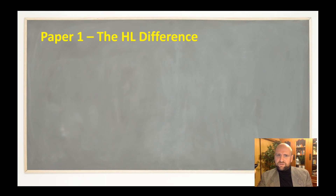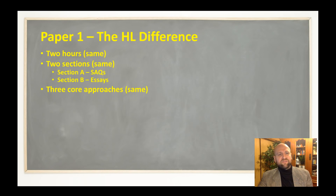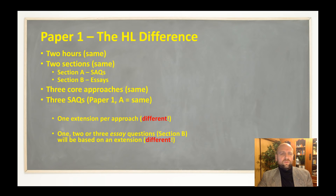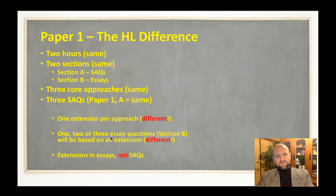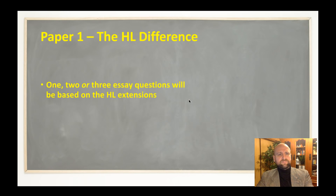Standard level students, thank you for watching — don't forget to subscribe. For higher level students, here's how Paper One differs: it's still two hours with two sections and the three core approaches. The difference is in the essay section, where extension topics are added to the essay questions — not the short answer questions. The extensions are: animal research for the biological approach, the effect of technologies on cognition for the cognitive approach, and globalization's effect on behavior for the sociocultural approach.